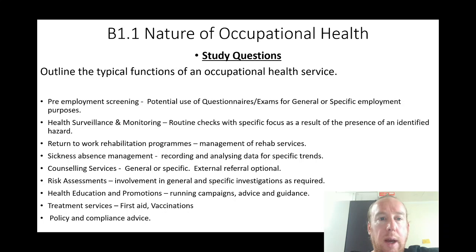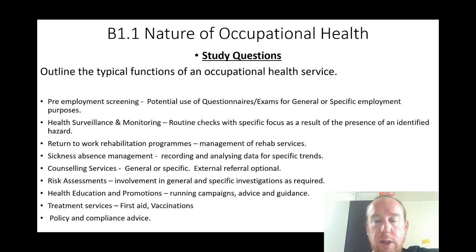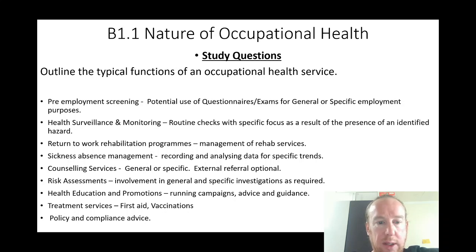Outline the typical functions of an occupational health service: pre-employment screening using questionnaires and examinations for general or specific employment purposes; health surveillance and monitoring with routine checks focused on identified hazards; return-to-work rehabilitation schemes; management of rehabilitation services; sickness and absence management; recording and analyzing data and specific trends; counseling services; external referral.